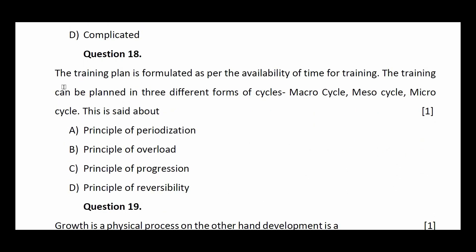Question number eighteen: the training plan is formulated as per the availability of time for training. The training can be planned in three different forms of cycles — macrocycle, mesocycle, microcycle. This is said about: principle of periodization, principle of overload, principle of aggression, or principle of reversibility. The answer is principle of periodization.